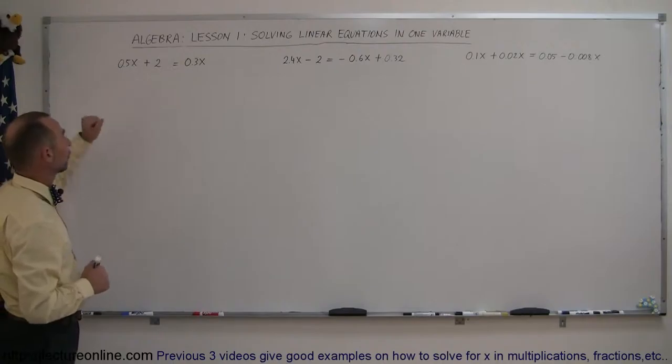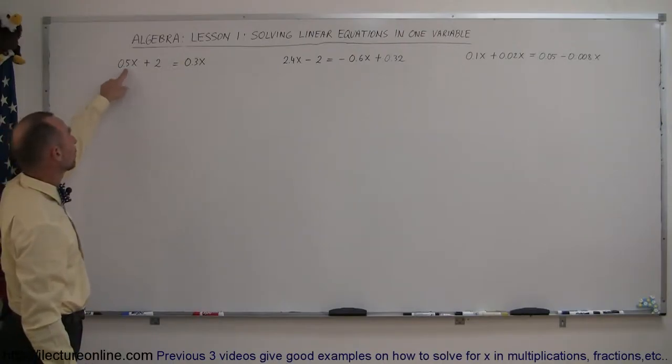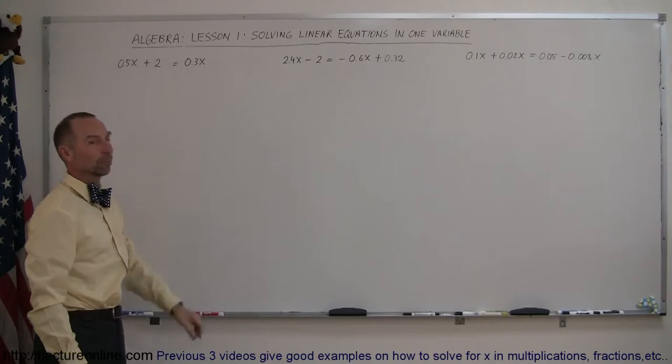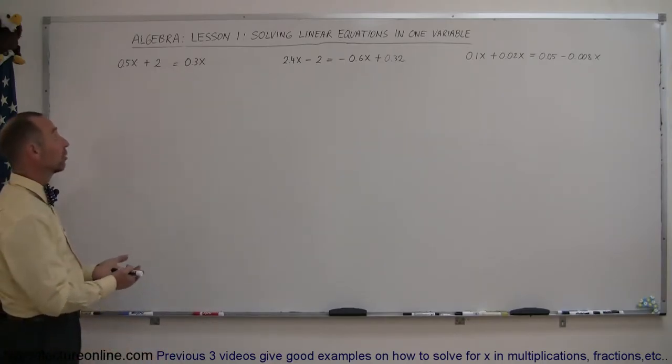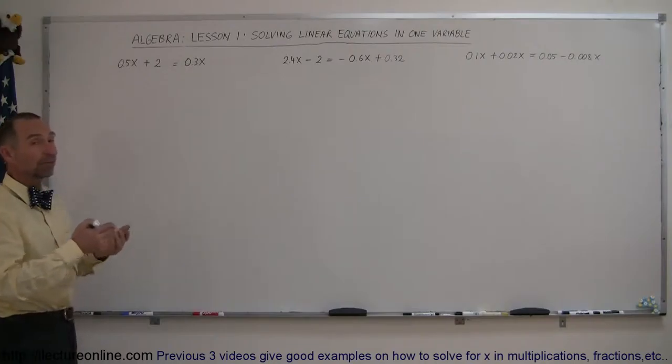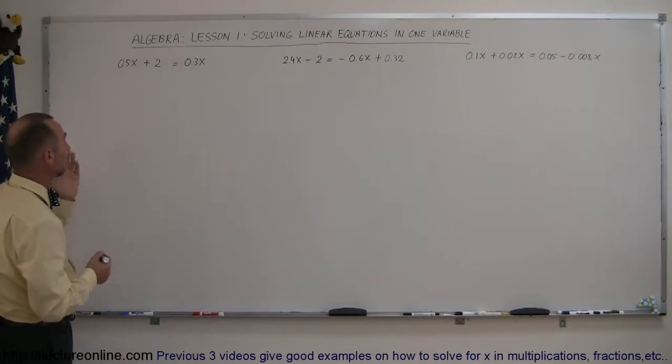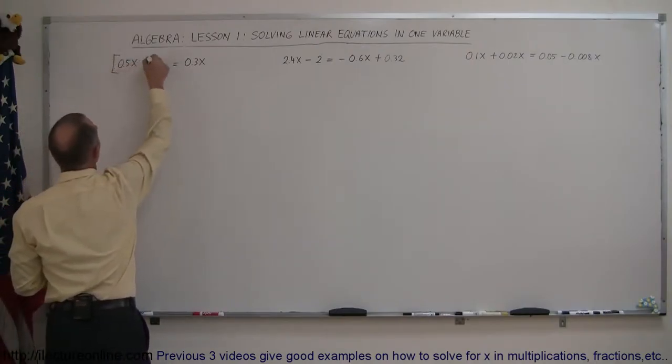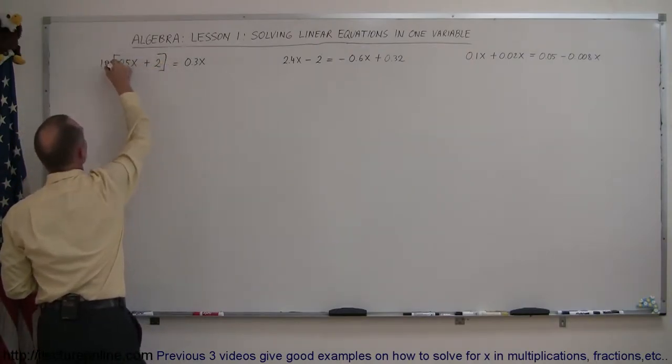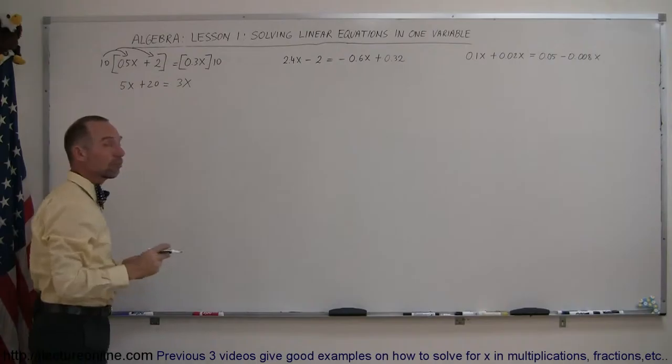If you look at our first example, notice that we have one decimal place here, no decimal places there, and one decimal place there. So to get rid of decimals, the best thing to do is multiply times 10 or 100 or 1,000 to get rid of the number of decimal places we're dealing with. In this case, since there's only one decimal place, we want to multiply both the left and right side equation by 10, because that will get rid of all the decimal places here.